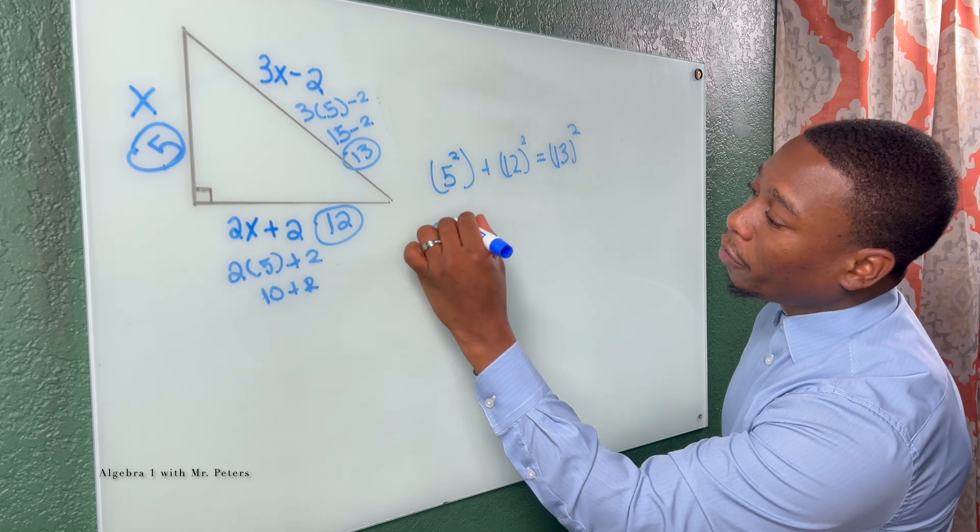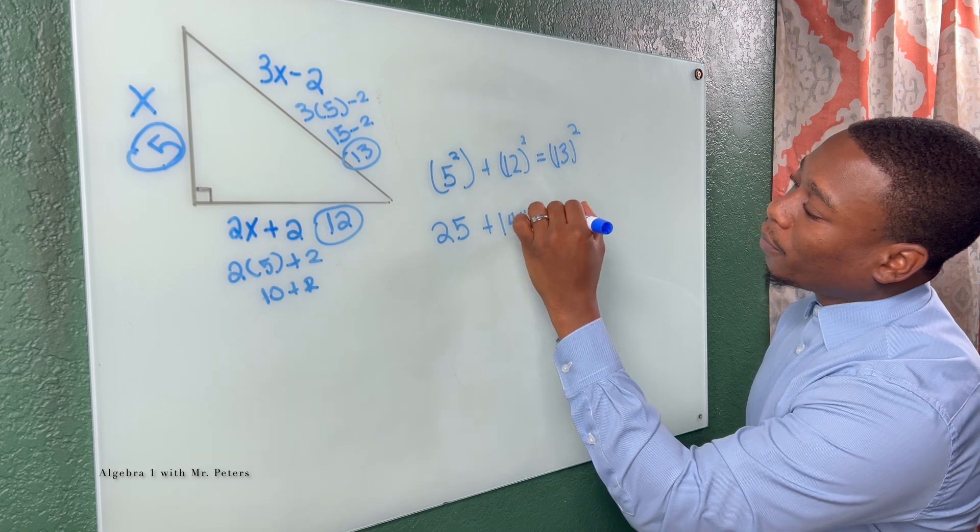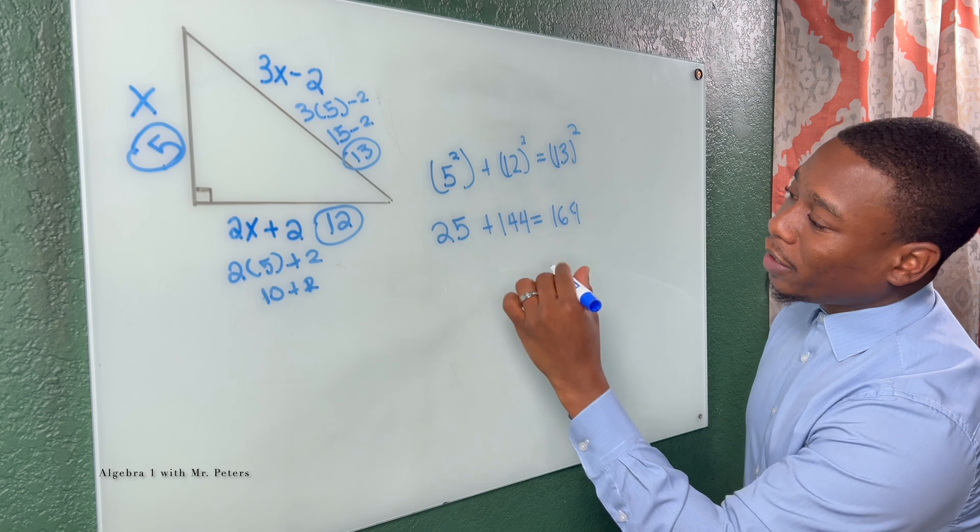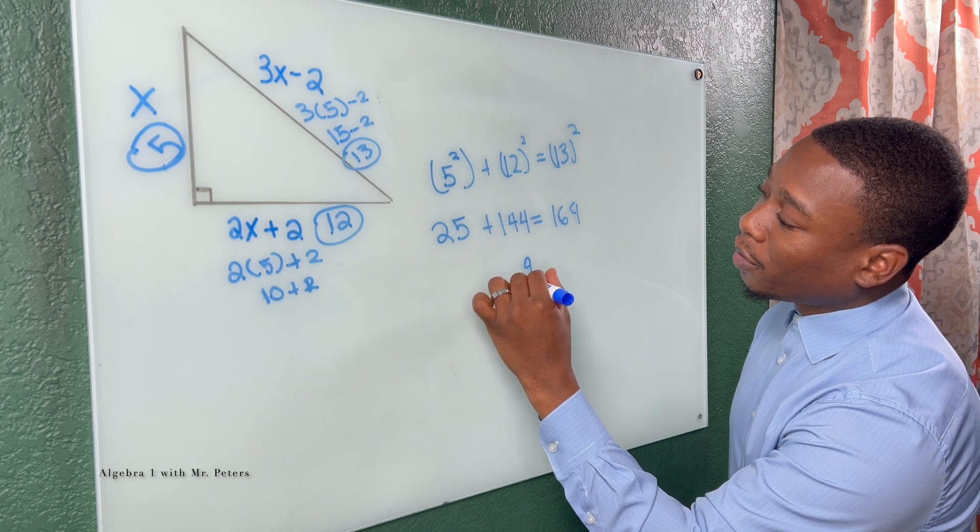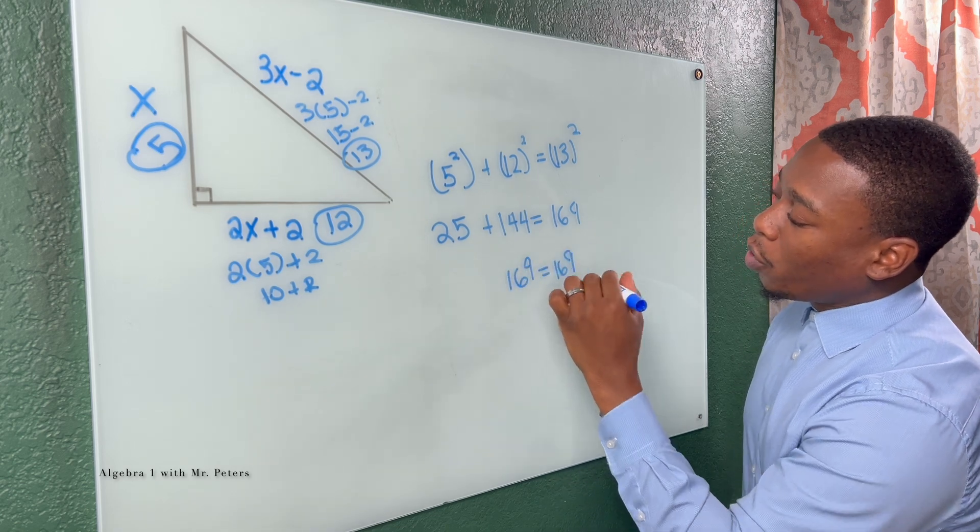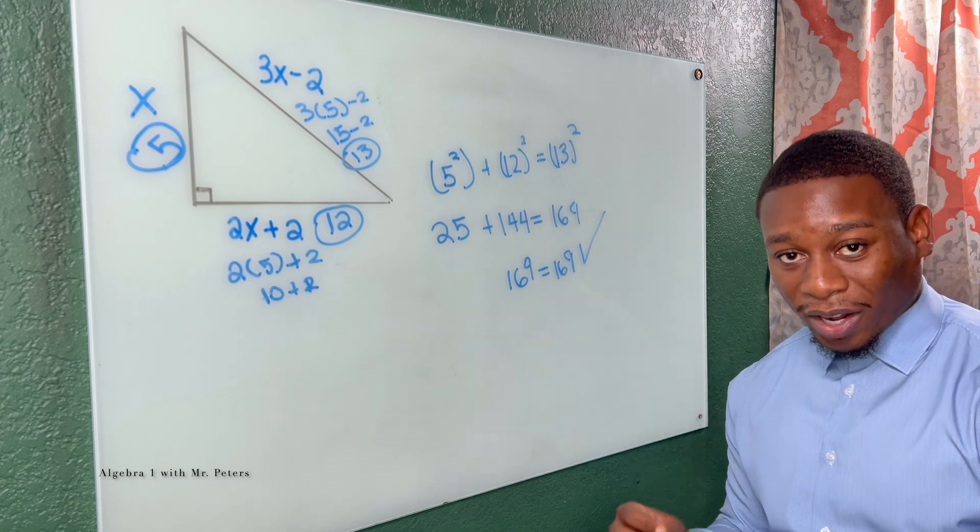So we have 25 plus 144 is equal to, I want to say 169. When we combine these, let's see, what do we get? 9, 6, 1. Yep. We know that each side is going to be equal to each other. So we know that this is correct.